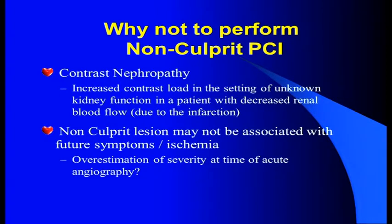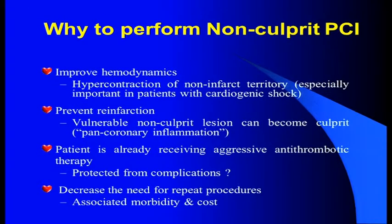Another point against non-culprit PCI is that the non-culprit lesion may not be associated with future events. On the other hand, points in favor of performing non-culprit PCI include: it improves hemodynamics; hyper-contraction of the non-infarct territory is especially important in patients with cardiogenic shock; it prevents infarction; and there is a decreased need for repeat revascularization, as the patient is already receiving aggressive antithrombotic therapy.